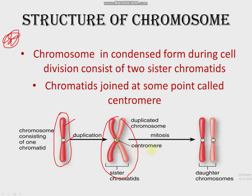How are questions asked in the exam on this topic? Questions are asked like: define chromatid — chromatids are the arms of a chromosome. Or, in one word, arms of the chromosome — answer: chromatid. Name the point where the arms or chromatids of chromosomes join together — the point is centromere. Or, define centromere — centromere is the point where two chromatids are joined.